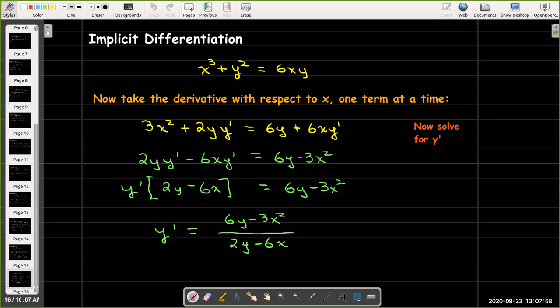And so I would get the derivative of the first, 6, times the second, just y, plus the first, 6x, times the derivative of the second, y'. And then I solve for y'.